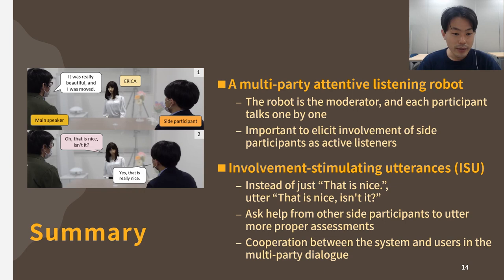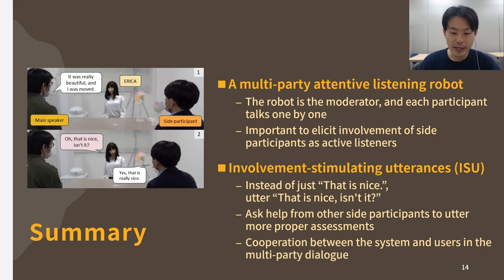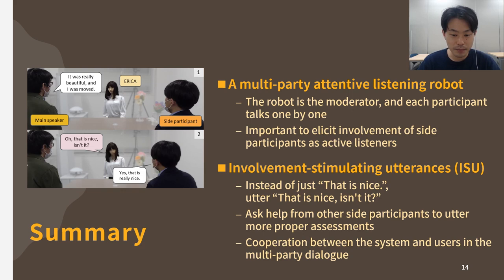In summary, we demonstrate a multi-party attentive listening robot where the robot is the moderator and each participant talks one by one. It is important to elicit involvement of side participants as active listeners to make the whole dialogue more activated. We proposed Involvement Stimulating Utterances (ISUs), customizing the normal assessment 'that's nice' to 'that's nice, isn't it?' directed towards side participants. The system asks help from side participants to utter more proper and varied assessments — this is cooperation between the system and users in multi-party dialogue. Thank you very much, and I hope to see you at the SIGDIAL conference.